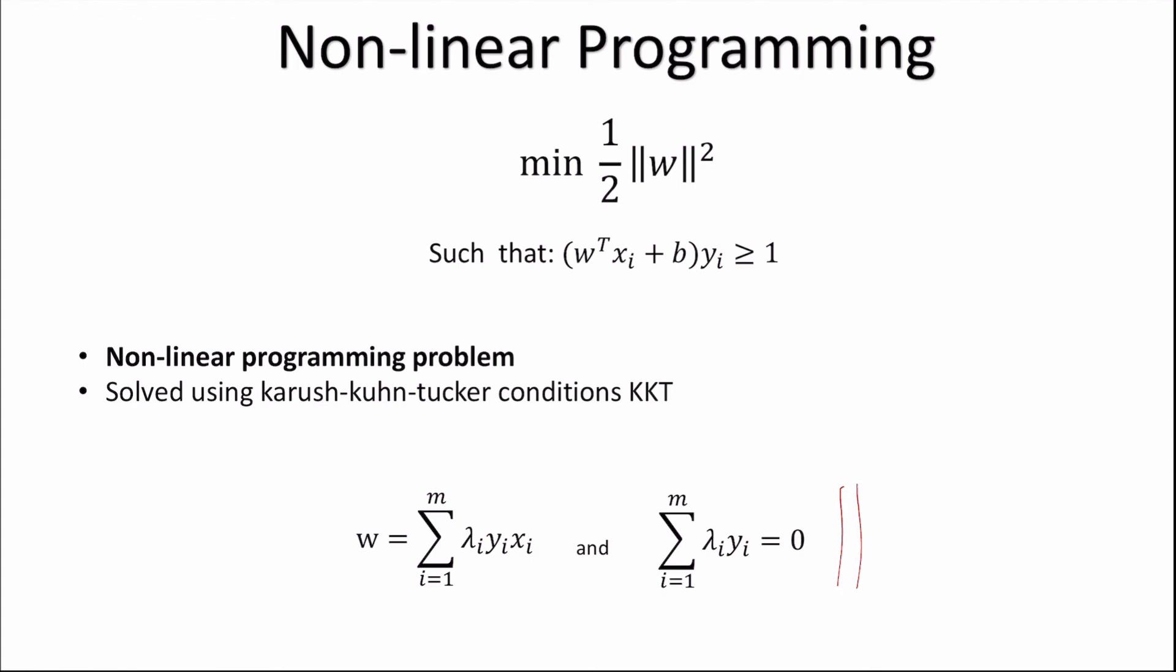So we use these conditions here to obtain optimal values for w and b, given training data x and labels y, which gives us the equation of the hyperplane with the largest margin as required. If you guys are interested in how these conditions are used to find our values of w and b for our hyperplane, please take a look at the link in the description.